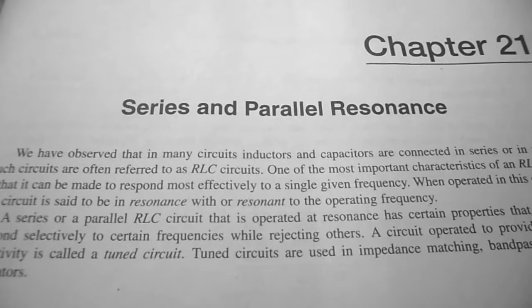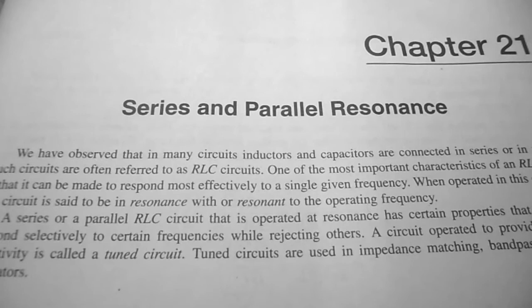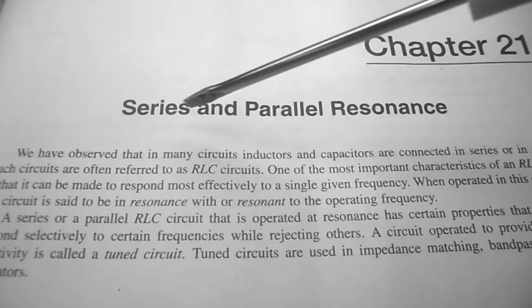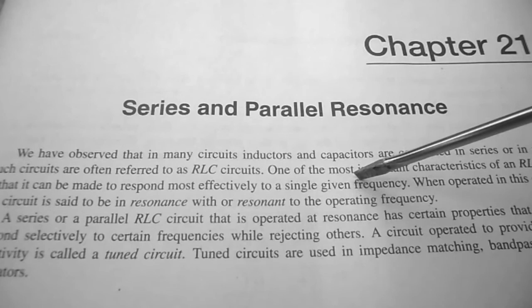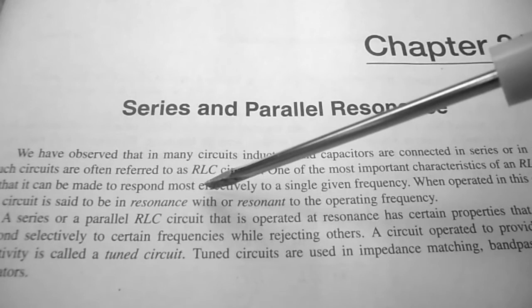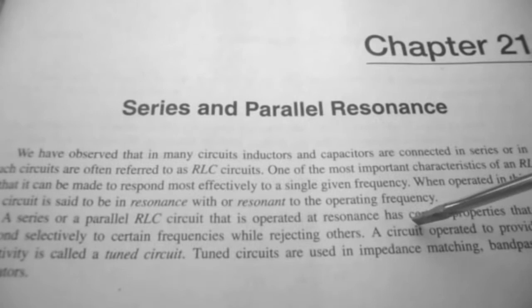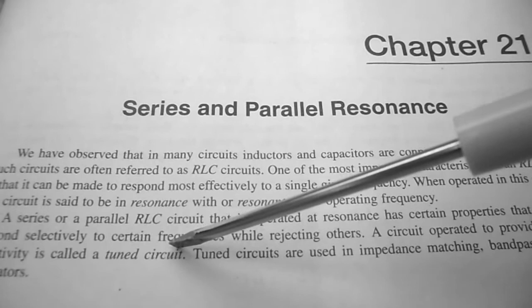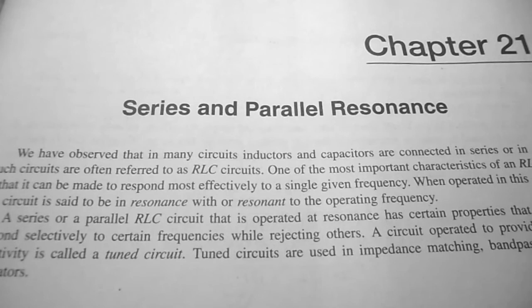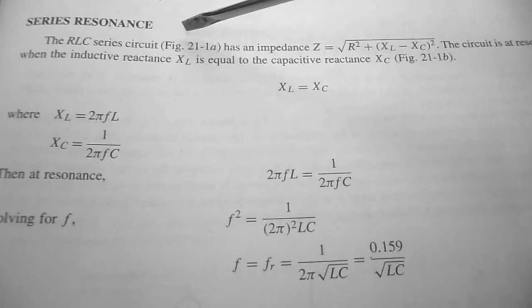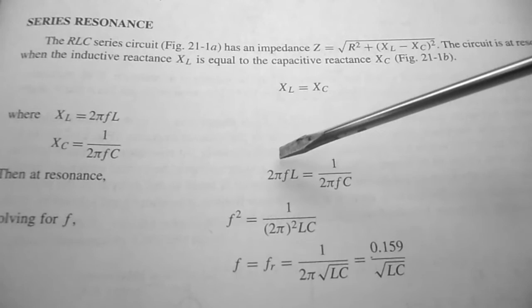Under Chapter 21, it says series and parallel resonance. One of the most important characteristics of an RLC circuit is that it can be made to respond most effectively to a single given frequency. When operated in this condition, the circuit is said to be in resonance with the operating frequency. A circuit operated to provide frequency selectivity is called a tuned circuit, used in impedance matching, bandpass filters, and oscillators.